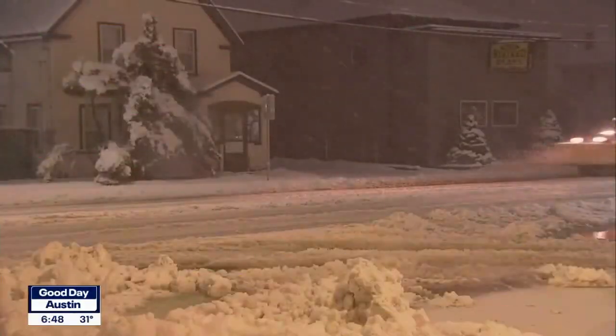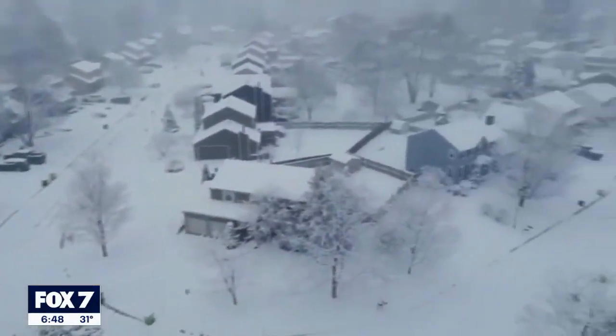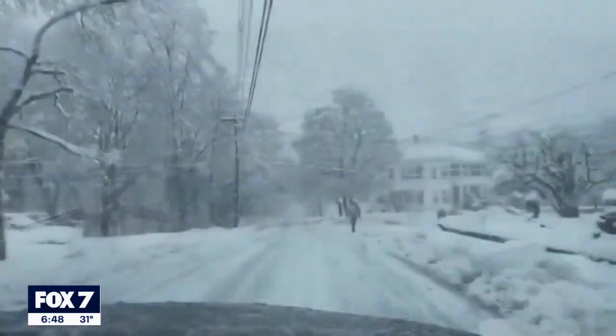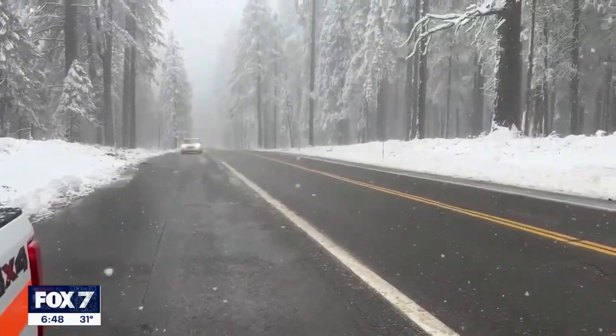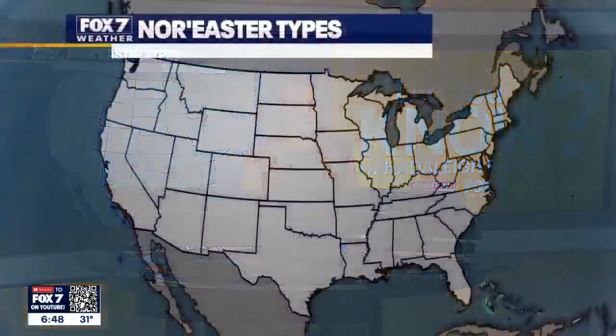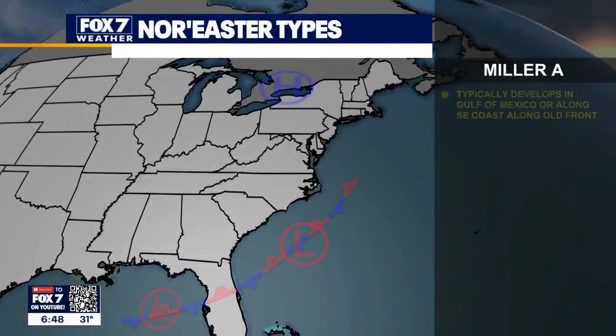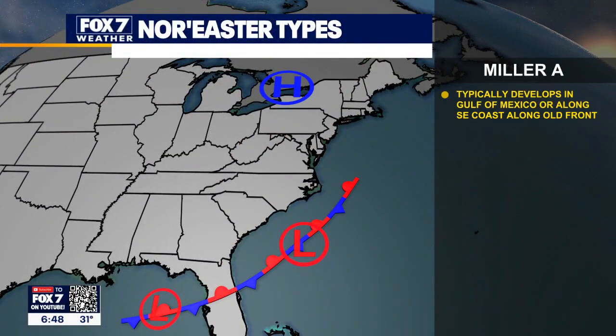If you've been paying attention to the weather lately, you've likely heard the term nor'easter. A nor'easter is a storm system over the east coast of the United States that typically has winds coming from the northeast. Did you know there are two main types of nor'easters? We've got Miller A and Miller B, named after the scientists who classified these systems nearly 80 years ago.